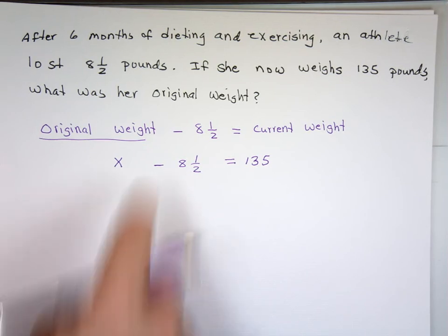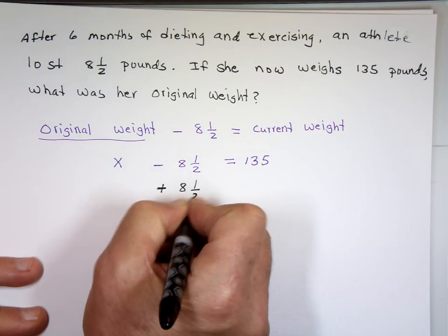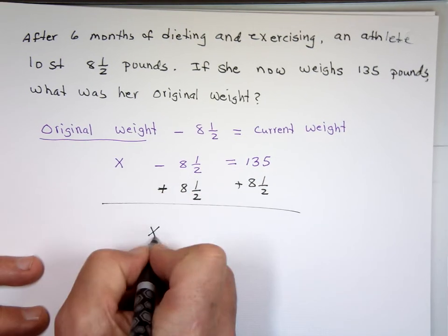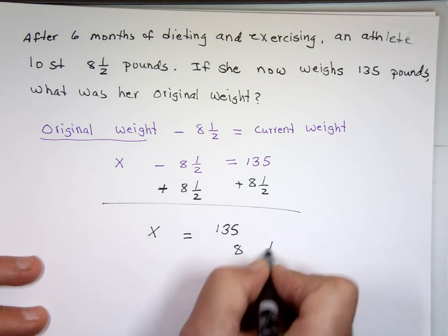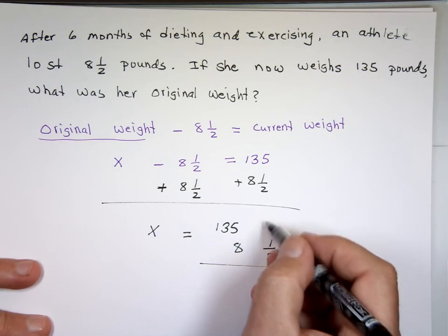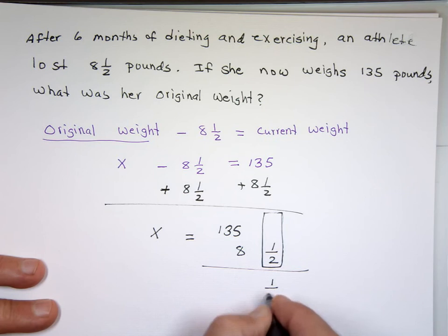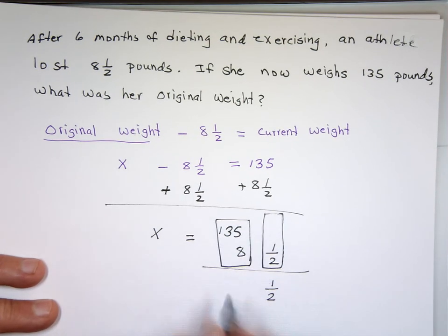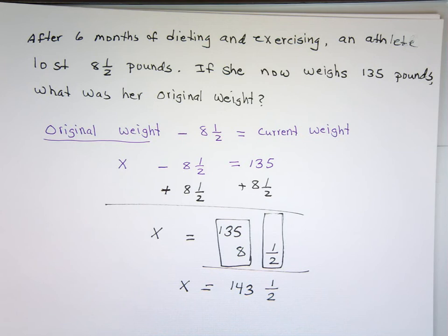That's a subtraction. How do you solve subtractions? You add. Again that's 135 and has no fraction. This is 8 and 1 half. Line them up vertically. What's 1 half plus nothing here for the fraction? 1 half plus nothing is 1 half. What is 135 plus 8? 143. So that was the original weight, 143 pounds and a half.